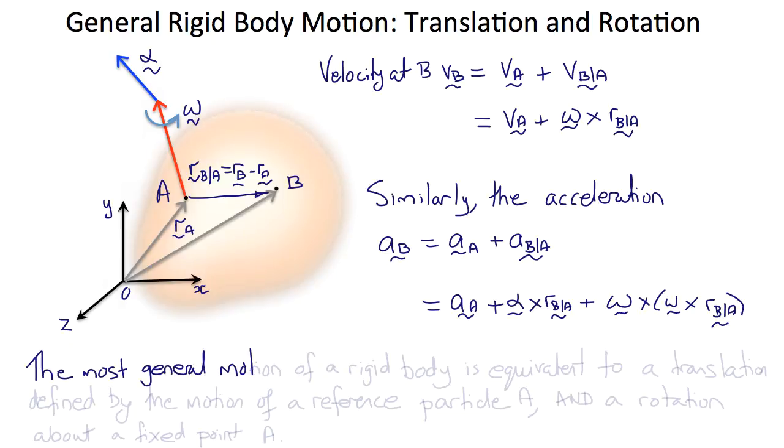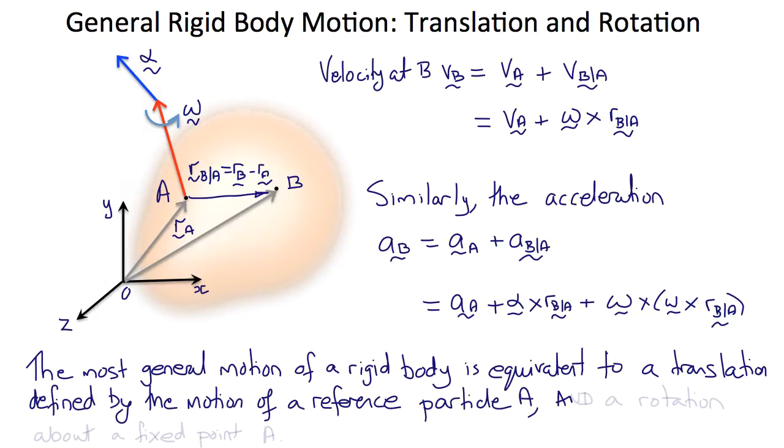So in other words, the most general motion of a rigid body is equivalent to a translation defined by the motion of a reference particle, in this case A, and a rotation about the fixed point A.